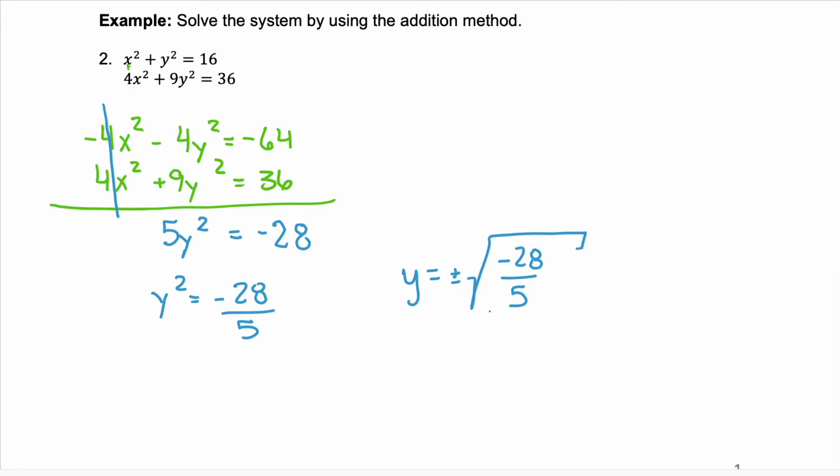Do you remember what happens when you take the square root of a negative? You get an imaginary number. So this is not a real number solution. And if you remember the definition of a solution to a nonlinear system of equations, it needs to be real value coordinates. So not real here means it's not a solution. So if we don't have a solution, then our solution set is the empty set.